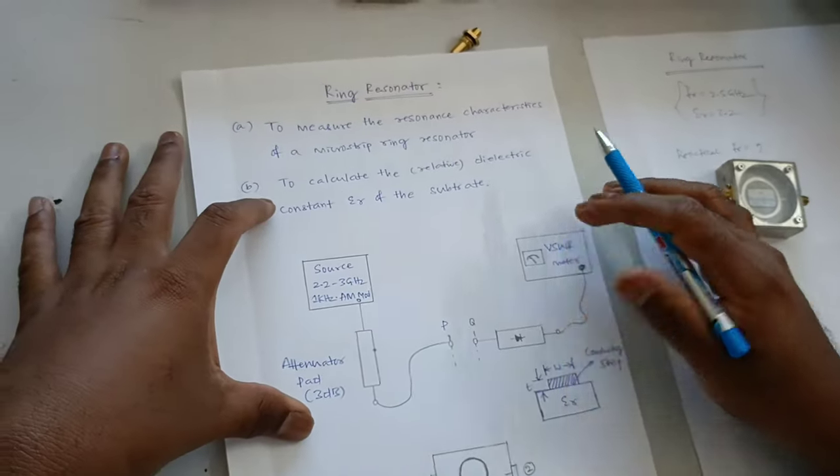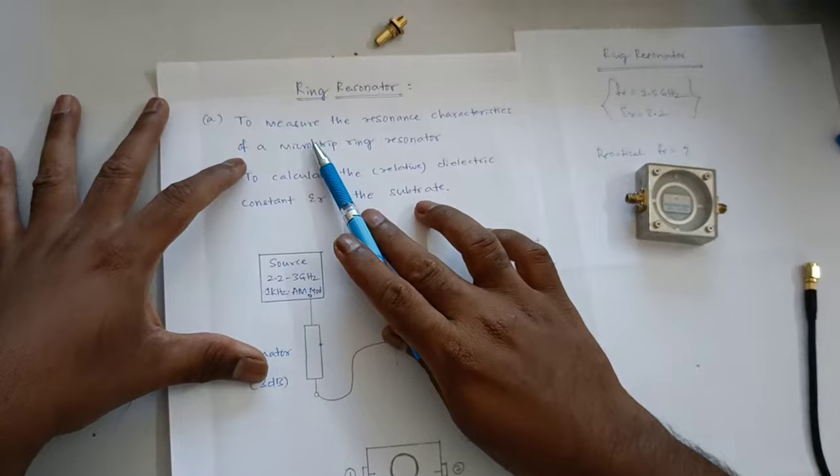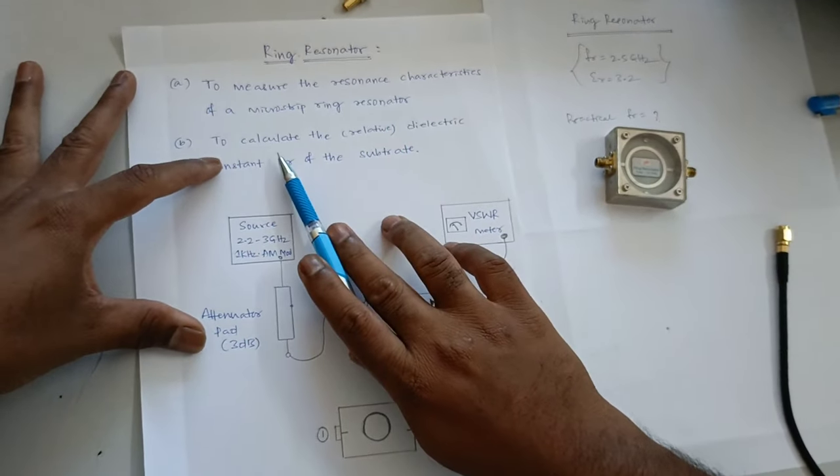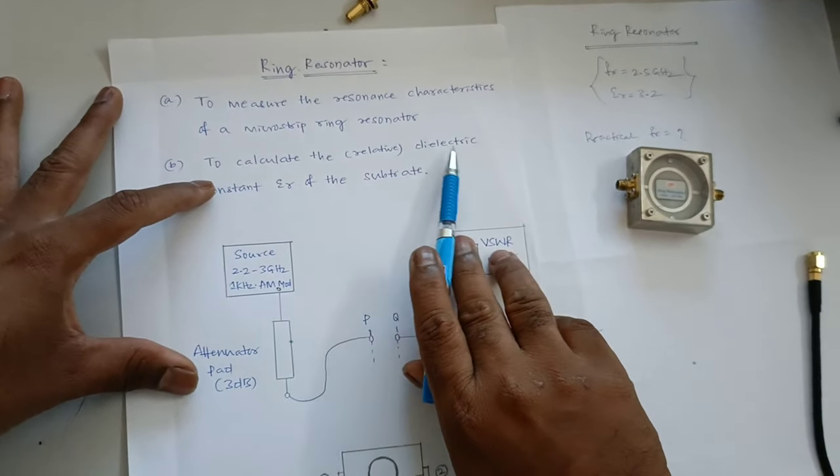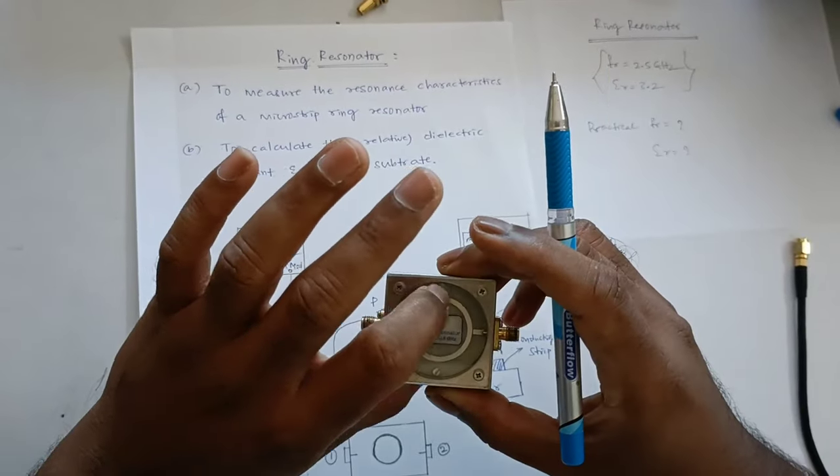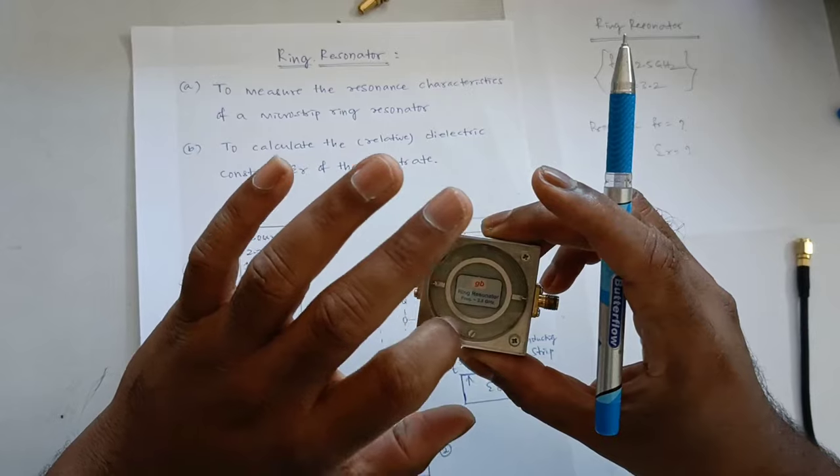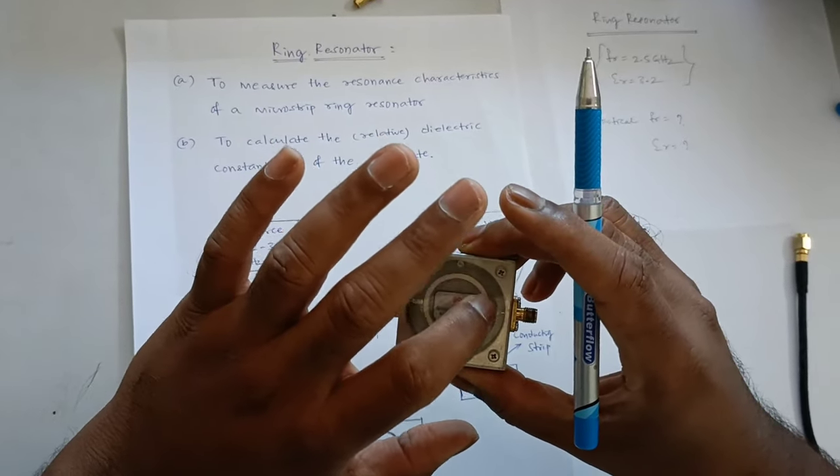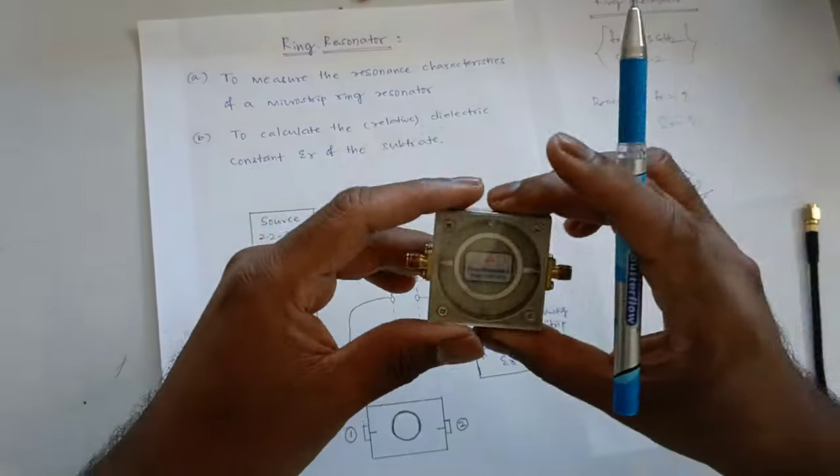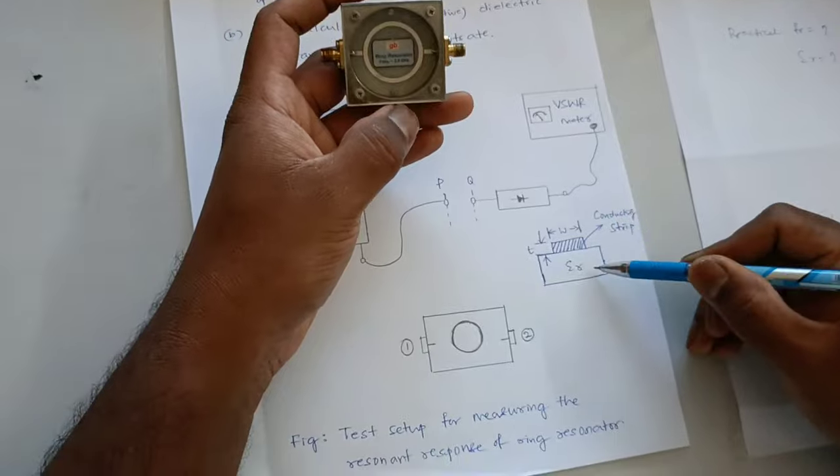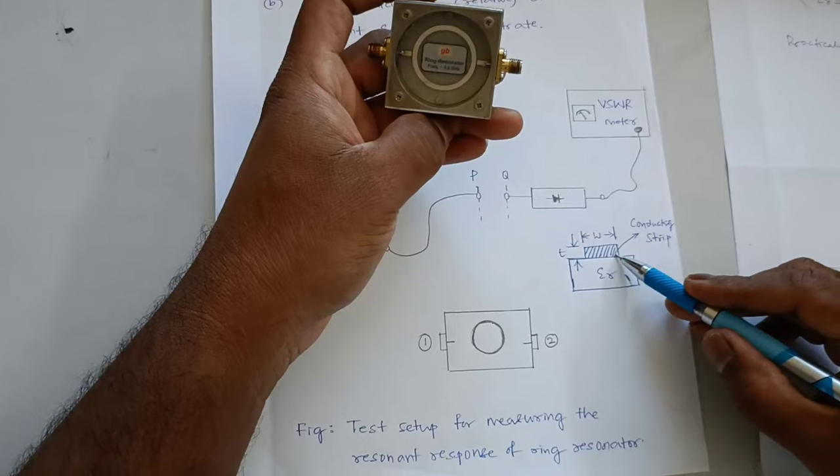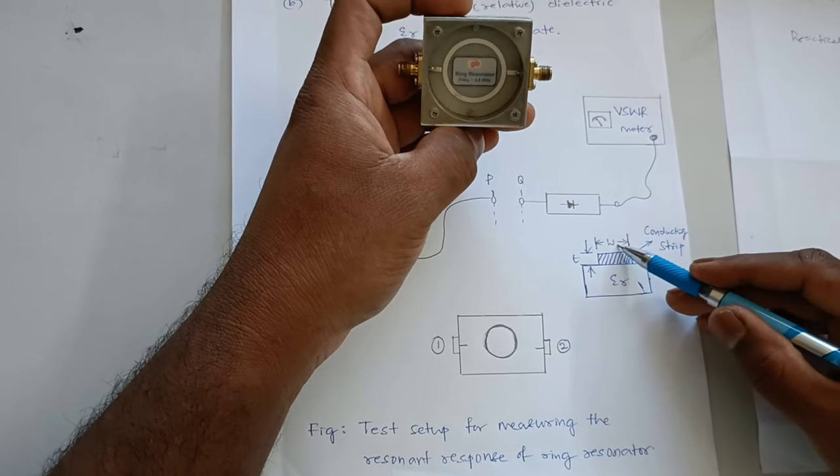Here it is a simple block diagram. The aim of the experiment, as I told, to measure the resonance characteristics of a microstrip ring resonator. The next point is, aim is to calculate the relative dielectric constant, that is epsilon R of the substrate. Substrate means the gray color substrate, you can observe within inside this ring resonator. And this circular strip, it is based on stripline conductor. So it is a microstrip component. And if you go through the cross section, it is epsilon R. This is called a substrate. And it is a strip. What you are observing, circular strip. And it is a width of the strip. It is a thickness.